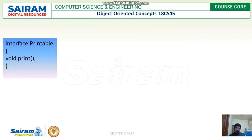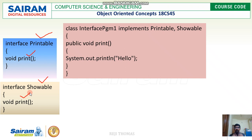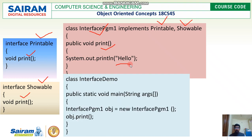Let us see another example where we have an interface called printable with a method called print. We also have another interface called showable, which also has the same method name print. So we have two interfaces with the same method. We are going to implement both interfaces in a class called pgm1, where the print method simply prints the message hello.